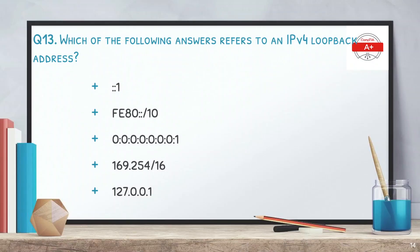Question number 13: which of the following answers refers to an IPv4 loopback address? The options include an IPv6 hexadecimal address, another IPv6 address, 169.254.16, and 127.0.0.1. The correct answer is 127.0.0.1 — this is the loopback address used in IPv4.